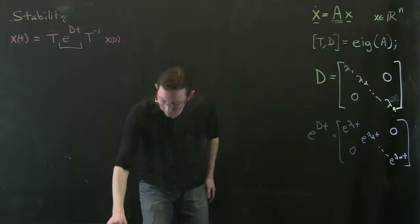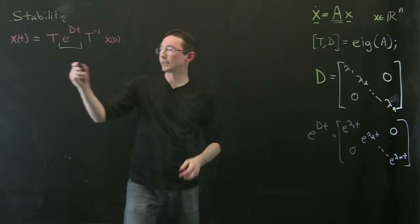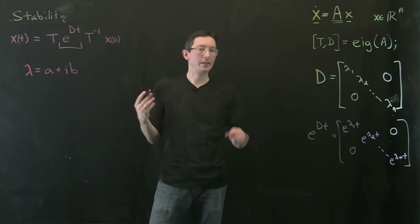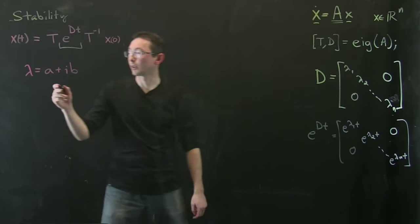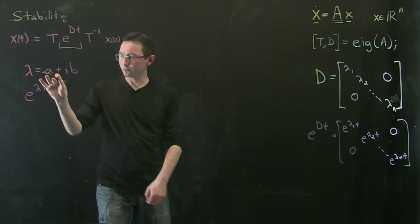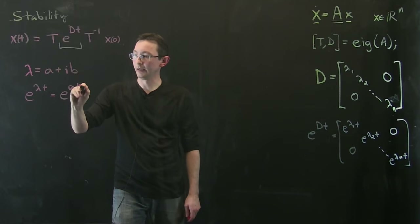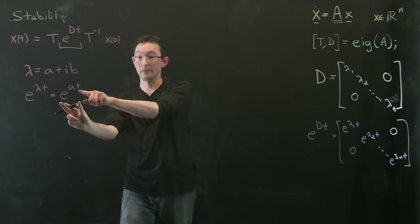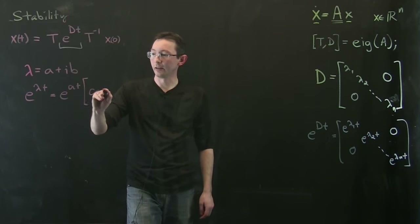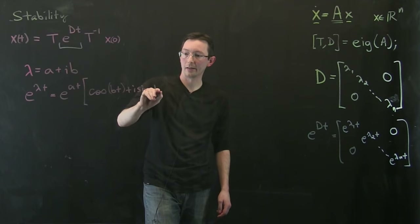What do we mean when we say 'blow up to infinity'? Each eigenvalue has a real and an imaginary part, so let's say lambda equals a plus ib. Going through complex analysis: if we take e^(λt), by Euler's formula that equals e^(at) — a real-valued function of the real scalars a and t — times cosine(bt) plus i times sine(bt).